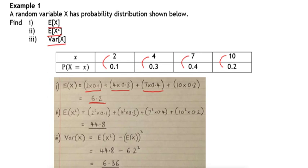For the expected value of x squared, what you do is first of all square the x value and then multiply by its probability. So 2 squared times 0.1, 4 squared times 0.3, 7 squared times 0.4, and 10 squared times 0.2. That gives us an expected value of x squared of 44.8.